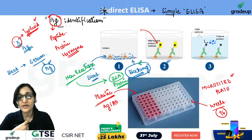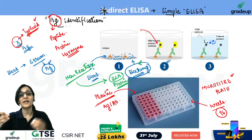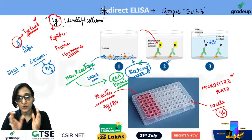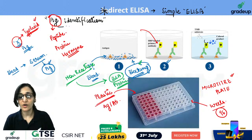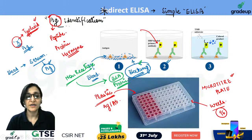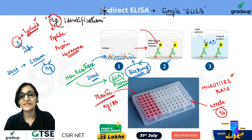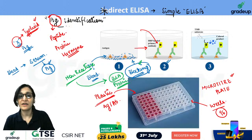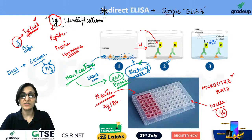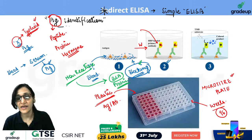The antibody is known and enzyme-linked. After each step, washing is performed so that unwanted material does not remain in the environment. After antigen binds, washing is done; after blocking, washing is done. Then the enzyme-linked antibody is added. The antibody will bind to the antigen. After washing, only the specifically bound antibody with enzyme remains.